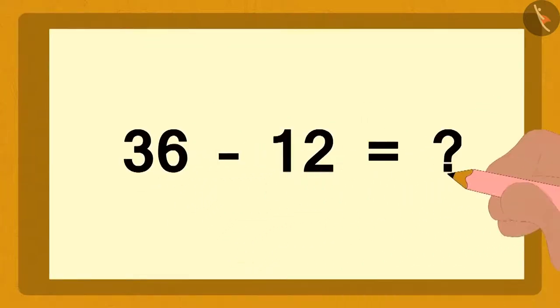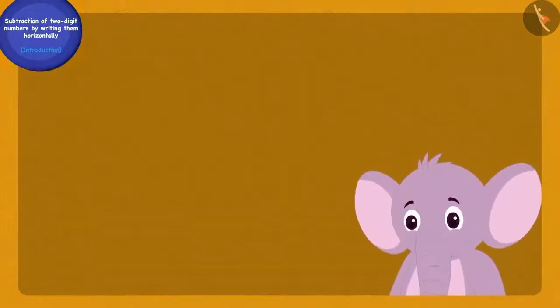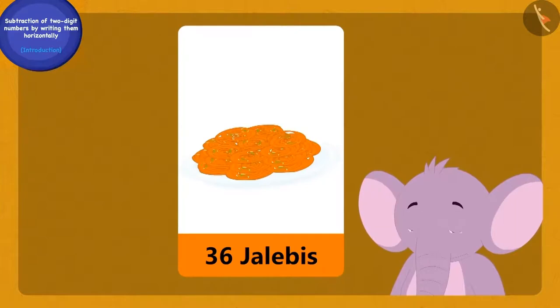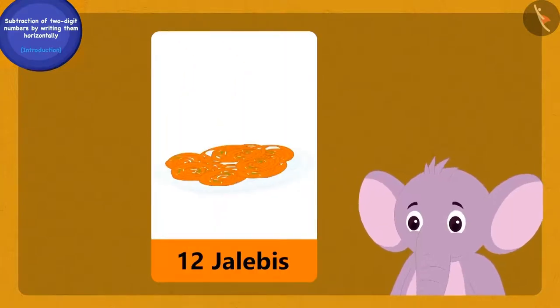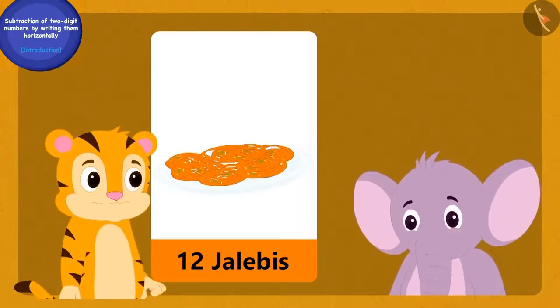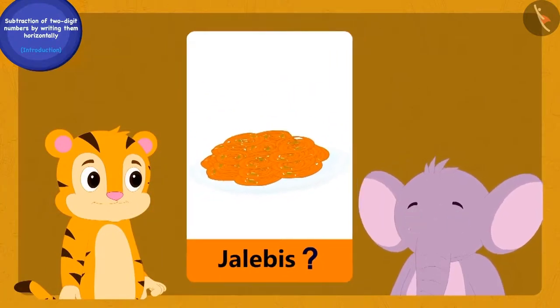Bablu wrote a question like this on paper and asked Raju, Look, Appu had 36 jalebes earlier. Now he has 12 jalebes. We have to find out how many jalebes Shere Khan bought from Appu.